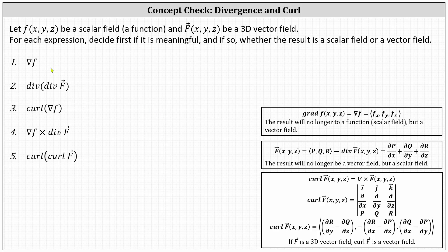Looking at number one, we have the gradient of the function f, which results in a vector field. Number two, we begin with the divergence of the vector field F, which results in a scalar field or function, and then we want to find the divergence of that scalar field or function, which we can't do. We can only determine the divergence of a vector field, and therefore number two is not meaningful.